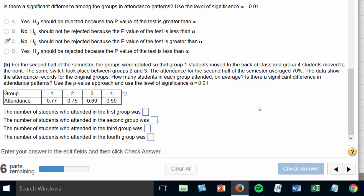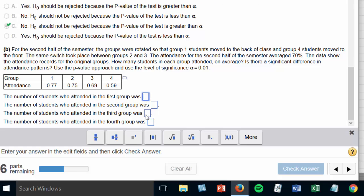Let's take a look at a little more. For the second half of the semester the groups were rotated so that group 1 moved to the back of the class and group 4 moved to the front. Also groups 2 and 3 switched. The attendance for the second half of the semester averaged 70%. The data show the attendance records for the original groups, how many students in each group attended on average. So again, each group started with 400 people and we're going to multiply it by those percentages.